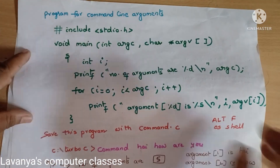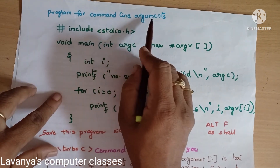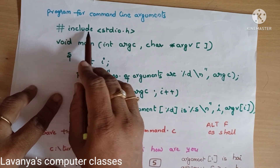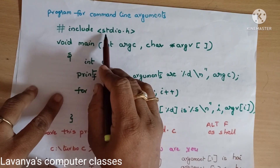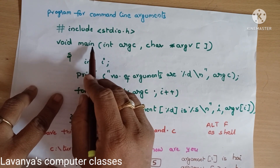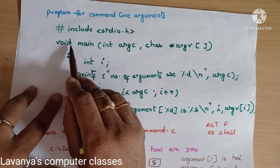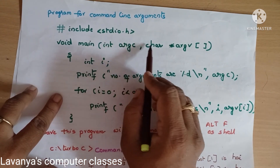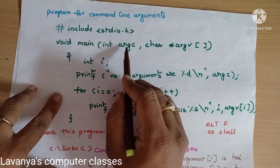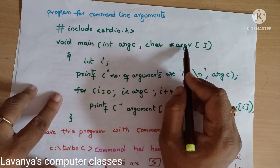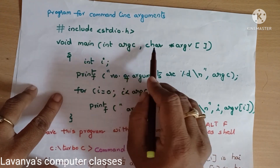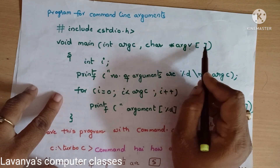Now I will explain a simple example showing how to execute command line arguments. It is a C language program. We write '#include <stdio.h>'. For command line arguments we change the structure of main: 'void main(int argc, char *argv[])'. ARGC is always integer data type, and ARGV is a pointer character array data type.